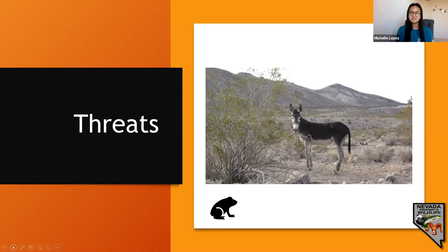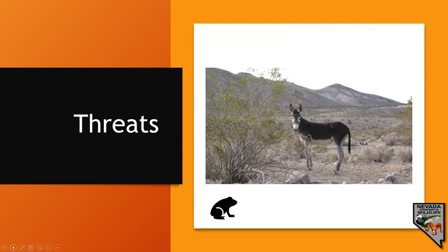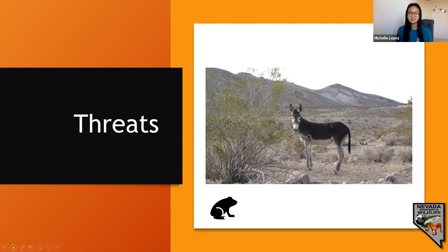The Amargosa toad was listed as endangered in the late 1990s as their populations dwindled from thousands in the 1950s to just hundreds. Threats include human-induced ones like development, harm from off-road vehicles, mining, and groundwater depletion. Non-native invasive species such as bullfrogs, crayfish, and catfish eat the eggs and hunt immature toads, while burros trample through the valley and damage the habitat.